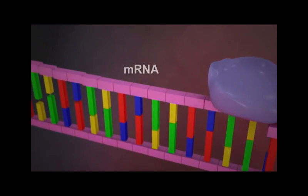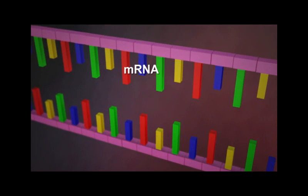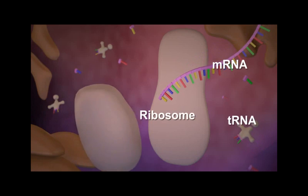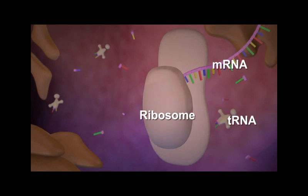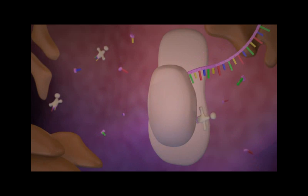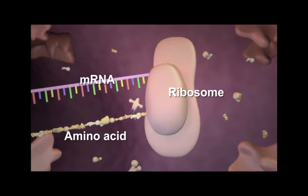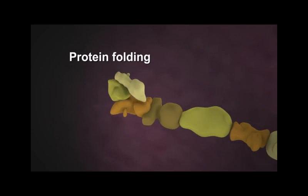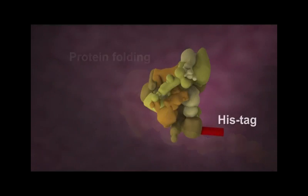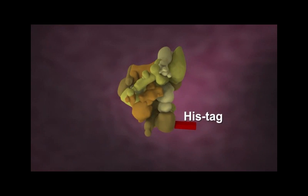RNA polymerase transcribes your template DNA to make messenger RNA. This messenger RNA is subsequently translated in the extract, which contains ribosomes, energy sources, and transfer RNA molecules, and ensures robust translation while enhancing proper folding of your histidine-tagged protein.